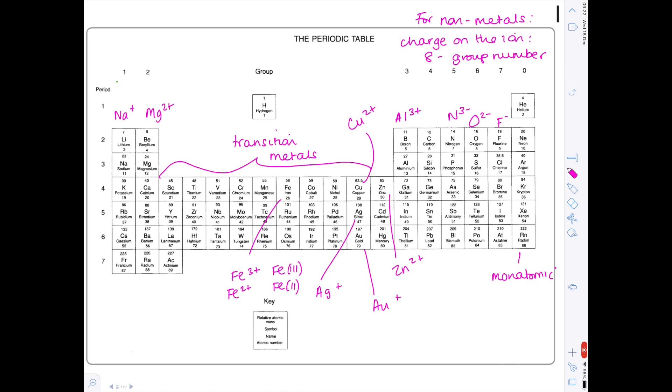Remember that the group 0 elements are monatomic, so they exist as single atoms. Why? Because they are very unreactive. Why? Because they have a full outer shell.